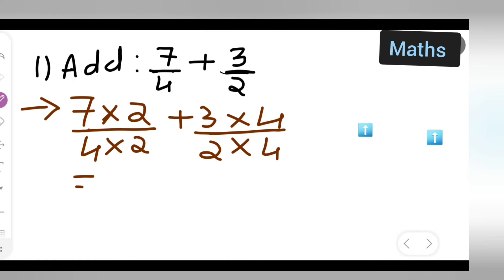Now 7 times 2 is 14. So 7 twos are 14 upon, and 4 times 2 is 8. Write down 4 twos are 8. Plus 3 times 4 is 12 upon 2 times 4 is 8.